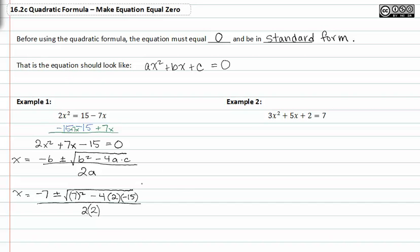So all I'm doing is taking my values and plugging them in. The only difference between what we're doing in this video and the past video, is that I had to set it equal to zero first, and get it in standard form.